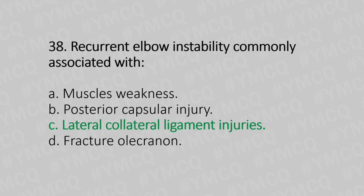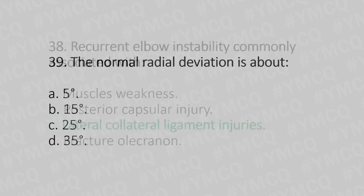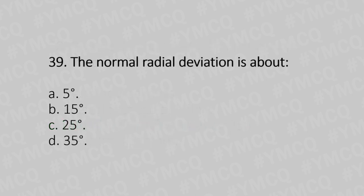Now let's move to question number 39. The normal radial deviation is about. Option A: 5 degrees. Option B: 15 degrees. Option C: 25 degrees. Option D: 35 degrees. And the answer is Option B, 15 degrees.